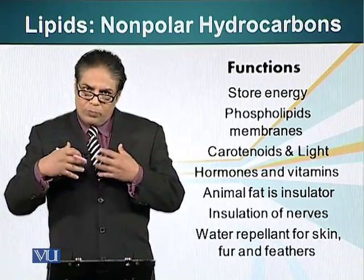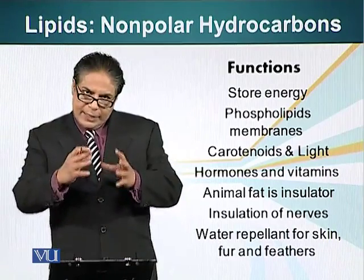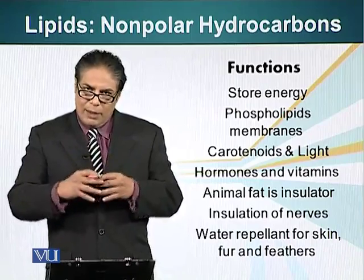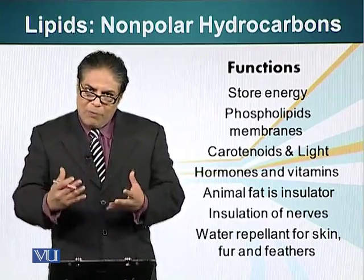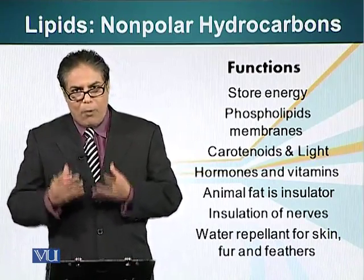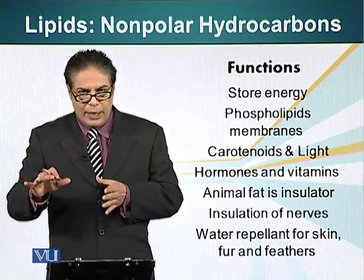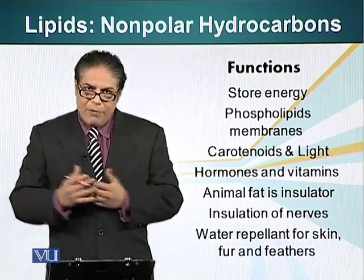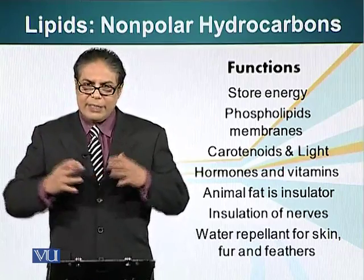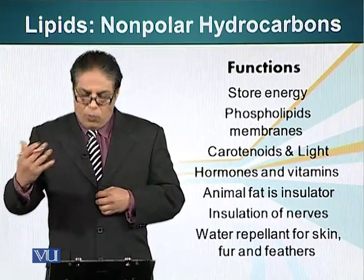We all know about photosynthesis. The molecule that captures light in plant tissue is also a type of lipid. Hormones and vitamins — many lipids play an important role in signaling and giving cells information from the outside environment. Animal fat is also an insulator: animals that live in cold environments accumulate a lot of fat under their skin, and that insulates them from the cold.